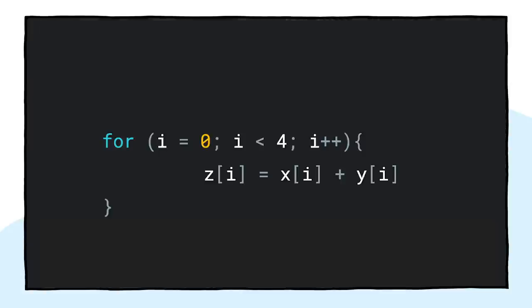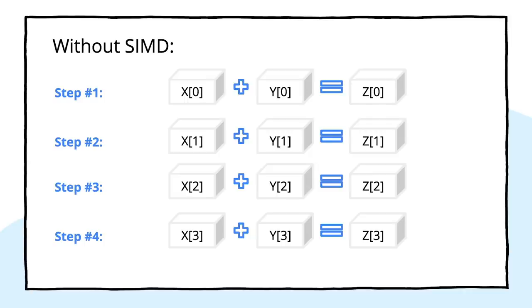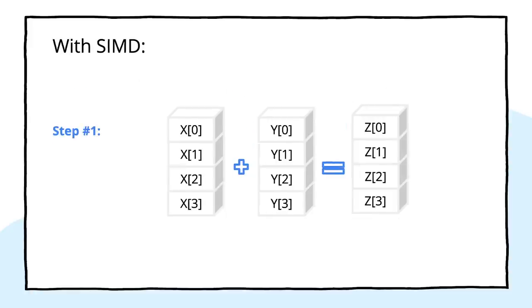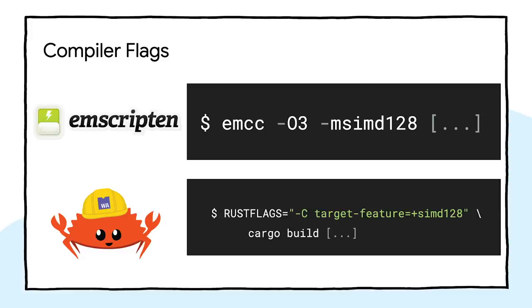To explain SIMD, let's look at this incredibly simple loop that just adds two arrays together. Without SIMD, the CPU would go through this loop and add the different elements together one by one, requiring four full steps. But with SIMD, the CPU is able to vectorize these elements and take just a single CPU operation to add them. The best part is that compilers can automatically detect these optimizations and do them for you. In Emscripten, you just need to pass the -mSIMD128 argument to EMCC, and for Rust you can pass -C target-feature=+simd128.